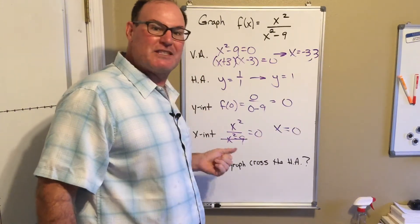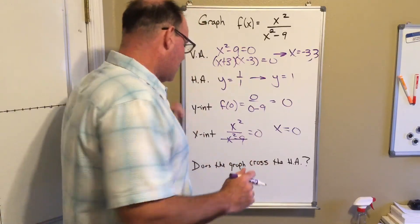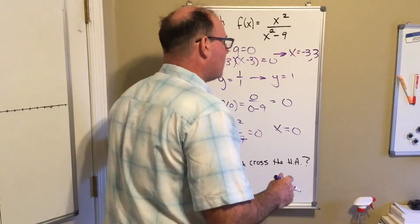The only time x squared can equal zero is when x equals zero, so the x-intercept and the y-intercept are the same point - they are the origin.